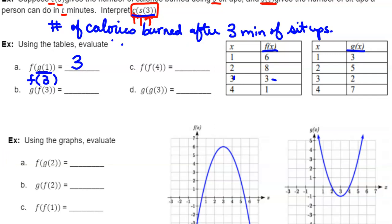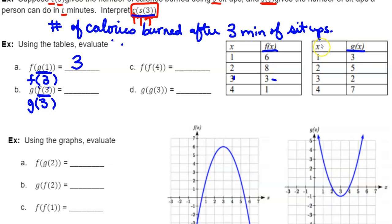Let's do g of f of 3. Again, we start from the inside and work out to the g function. What is f of 3? Going to the f function, when x equals 3, the y value is 3. So I replace the inside piece with 3. Now I take that 3 and put it into the g function. When x equals 3 in the g function, the matching y value is 2. Therefore, g of f of 3 is equal to 2.